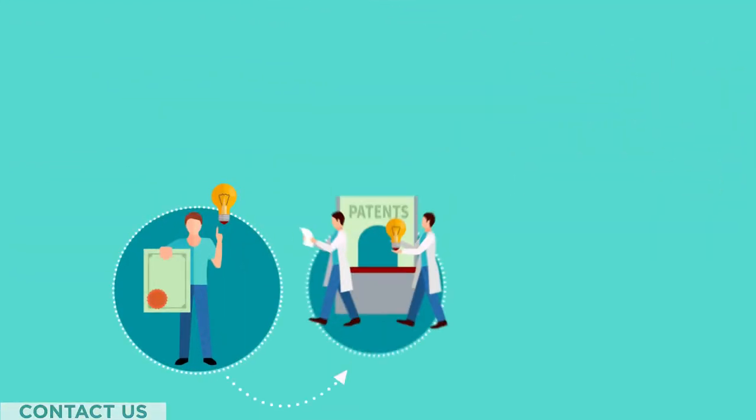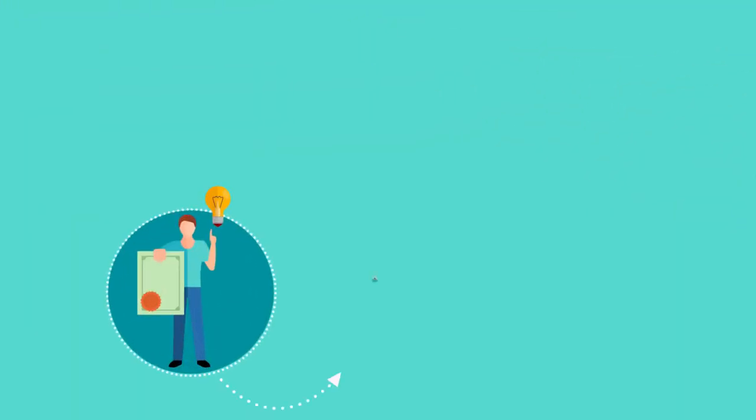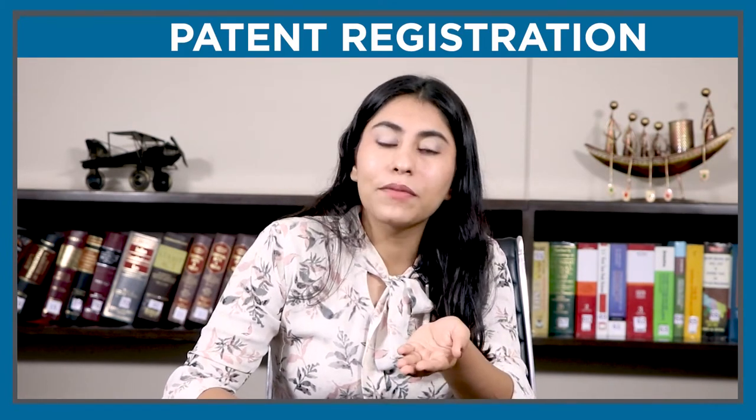Patent registration also has many benefits. Your invention will be legally protected. Once you have a patent registration, it is valid for 20 years from the registration date. A patent can be bought and transferred. Patent registration also allows you to license your invention and earn royalties.